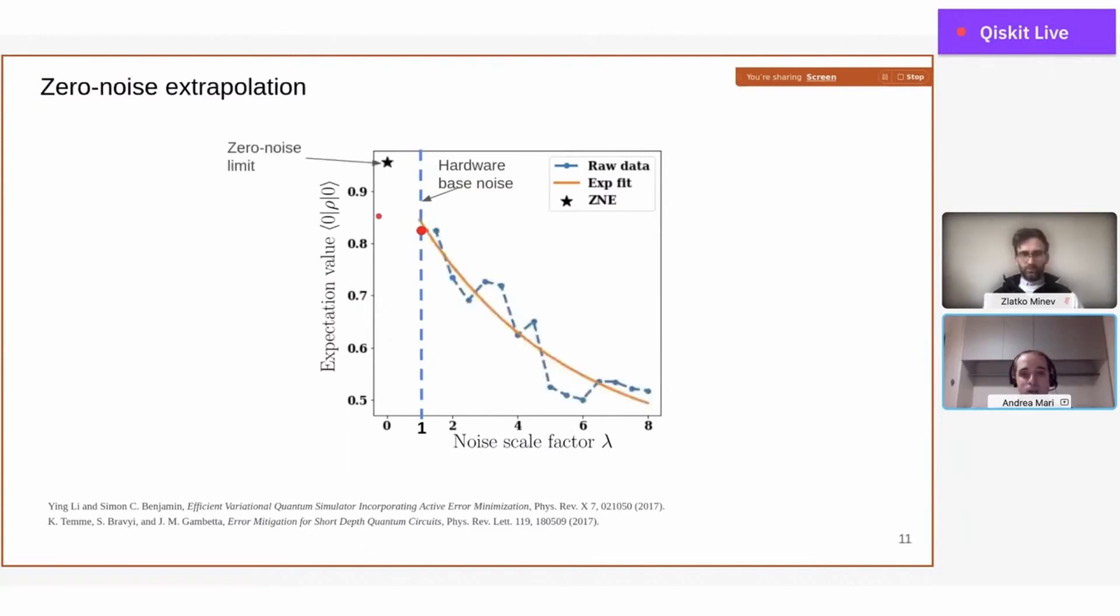What can be done is to increase the level of noise to larger values of lambda, to take different measurements with different lambda. When you have all these blue points, you can fit a model—in this case an exponential fit—and extrapolate to the zero-noise limit. This will be the error-mitigated expectation value.